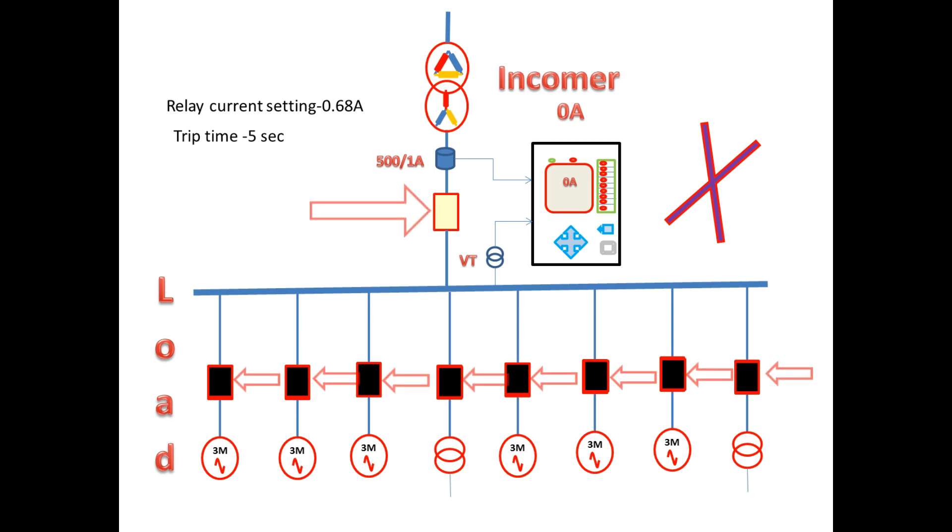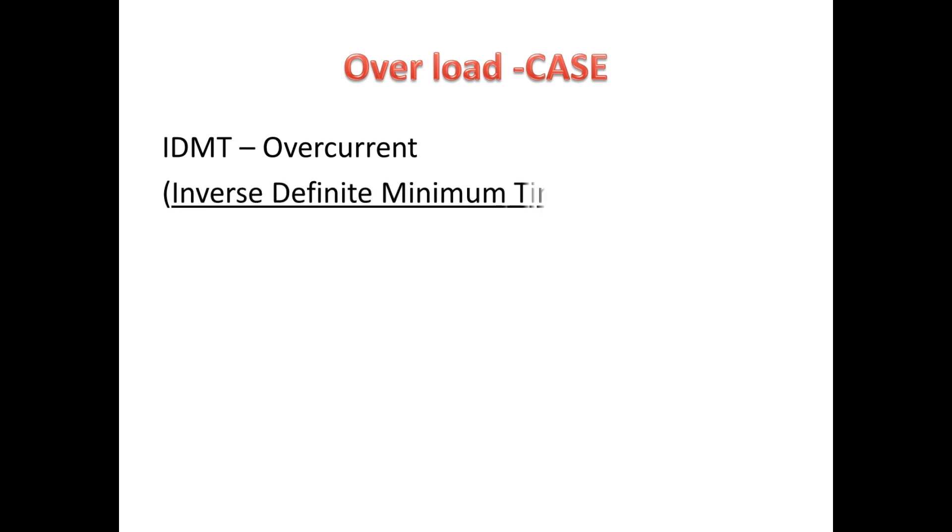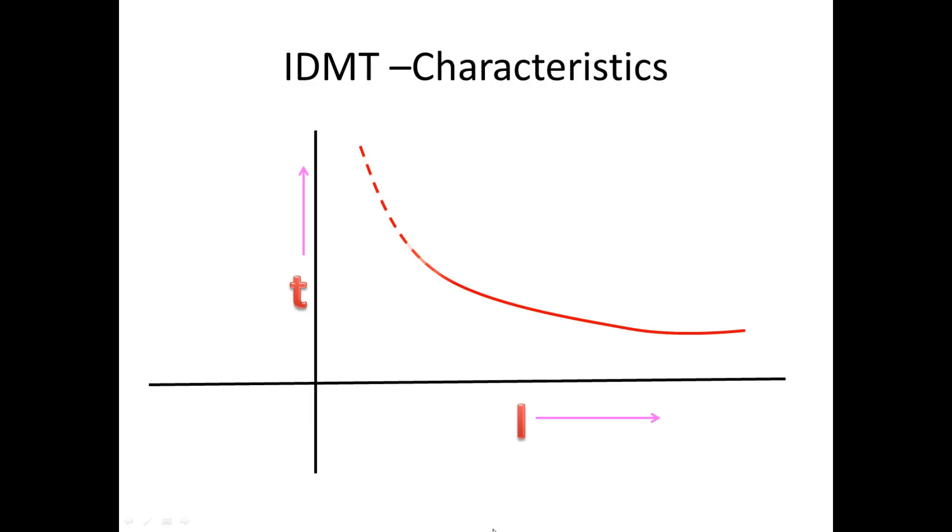Because the incomer has to give chance to trip outgoing first, then only it has to take its own chance. In order to overcome this problem for overload case we have curve based trip, i.e., IDMT. The full form of IDMT is Inverse Definite Minimum Time. This tripping characteristic will be like this: when the current increases, the tripping time will get reduced.